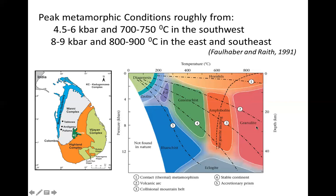Granulite is one category. Another is amphibolite facies, where temperature is a little lower and pressure is moderate. Then there is greenschist facies, which represents even lower temperature conditions and comparatively lower pressures.